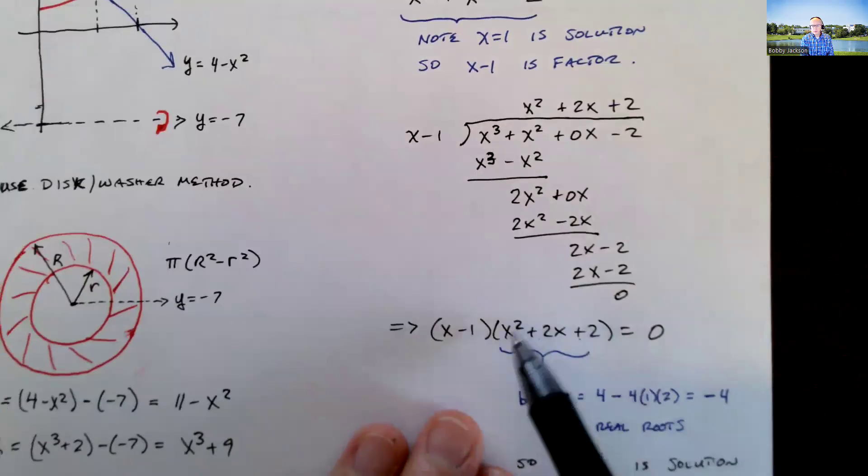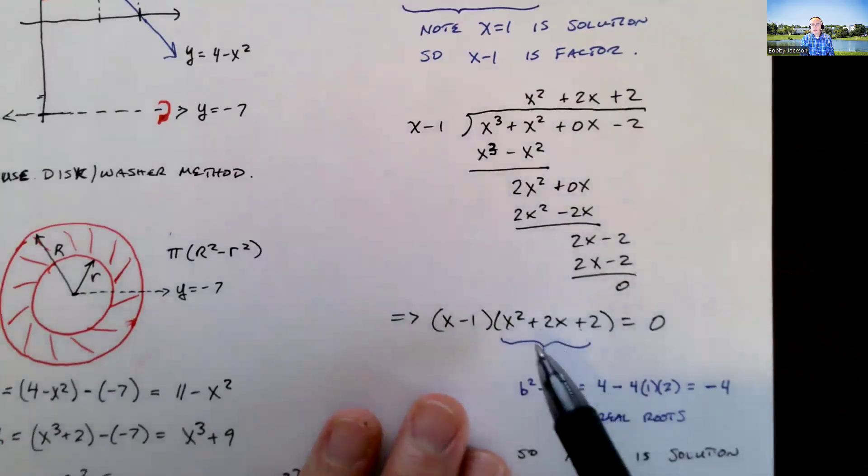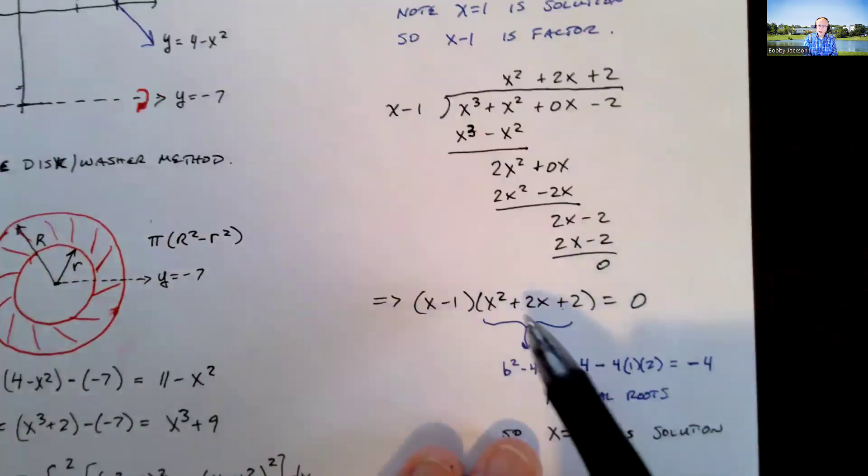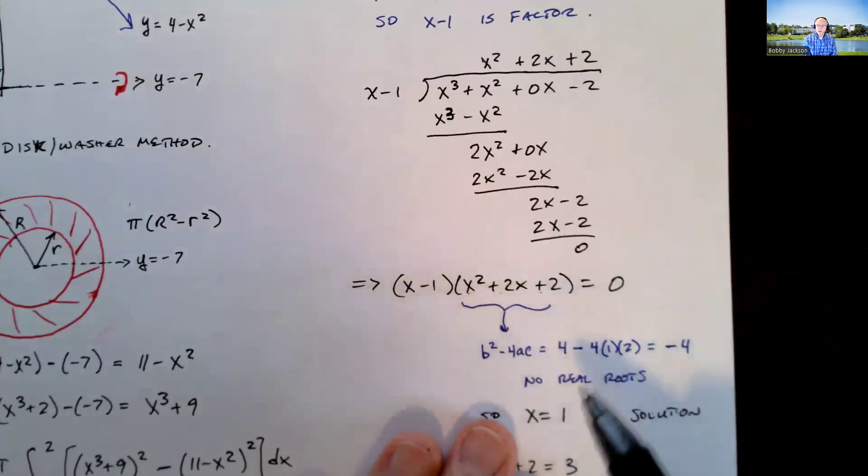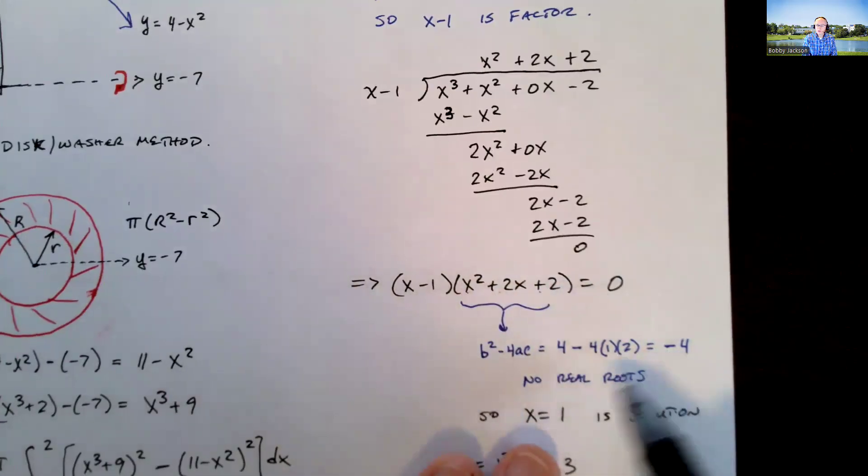But basically, that means this factors as x minus 1 times x squared plus 2x plus 2. Now, this is prime, can't be further factored. And if we think of the quadratic formula to find out when is this equal to 0, b squared minus 4ac. b is 2, 2 squared is 4, 4 times a is 1 and c is 2. I get 4 minus 8, which is negative 4, which means there's no real roots.